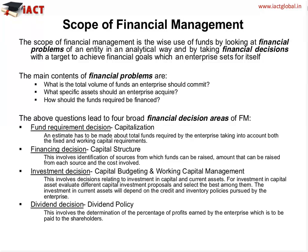The four decision areas are: fund requirement decision, financing decision, investment decision, and dividend decision. The fund requirement decision is basically to estimate how much fund the company requires, taking into account both fixed requirements and working capital requirements. This will help us understand the concept of capitalization, which we will cover in detail in one of our later modules.